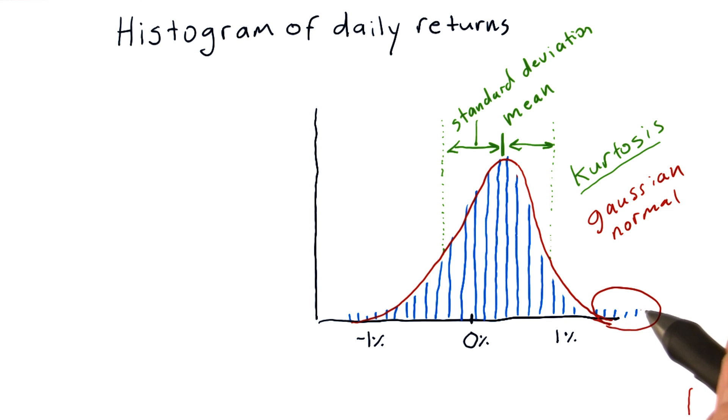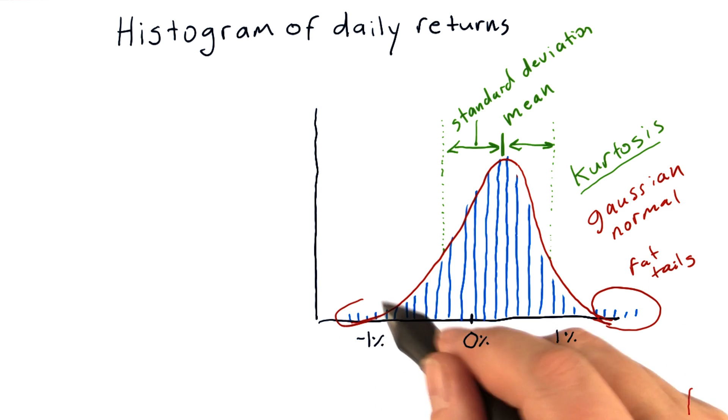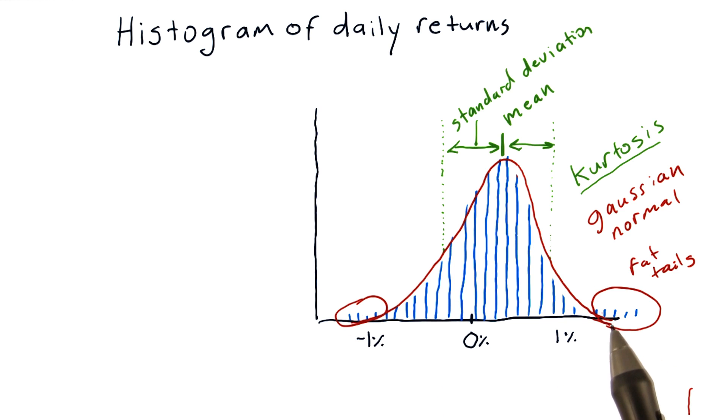So in this case, we have what are called fat tails. We've got them over here and over here. What that means is that there are occasional and more frequent than would happen if we had a regular Gaussian distribution, there are frequently large excursions, more frequently than if this was a normal distribution.